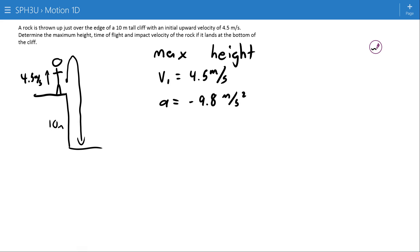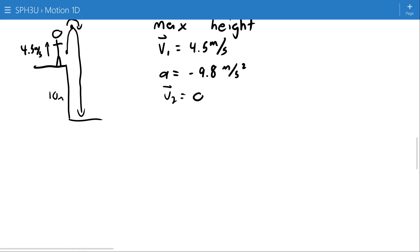And the third piece of information that we have at the max height, remember if this object is going to turn around, it has to stop as it's turning around. It can't get going down if it's going up if it doesn't at least stop for a second. And what we're interested in here is the maximum height with the delta d. See the equation?